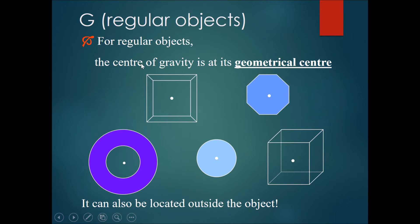For regular objects, the center of gravity is at its geometrical center. Like this octagon is at the center, like this square is at the center, circle at the center, this cube at the center as well. Then we have some interesting things like a wheel or a doughnut. If it's a wheel or a doughnut, the center of gravity is actually in the middle of the hole, which is interesting because the center of gravity is not on the object itself. It can also be located outside the object.